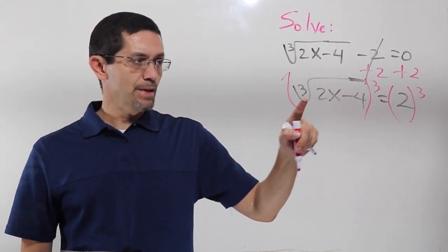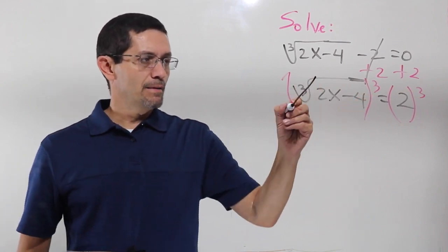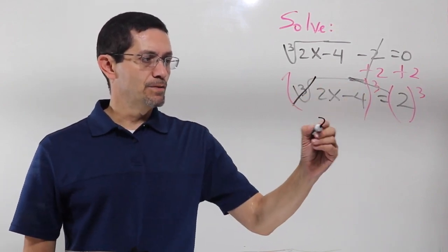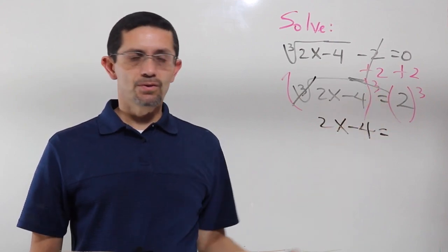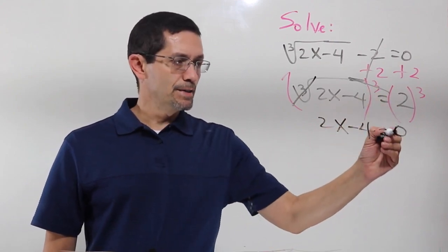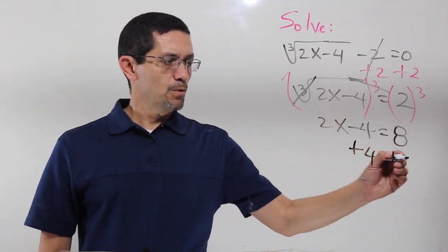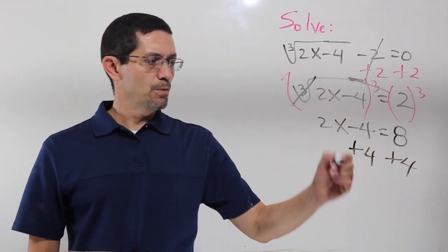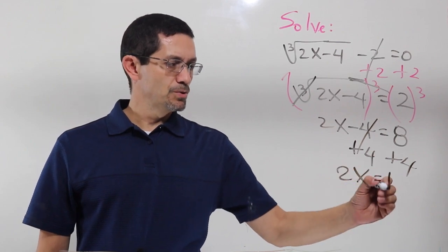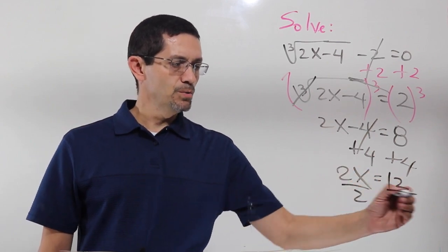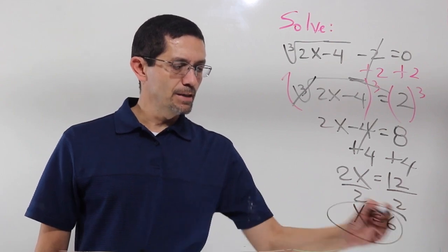If I have a cubic root, then I'll raise it to the third power. That will cancel that. And I'll have 2x minus 4, and 2 to the third power is 8. After that, it's just a matter of solving. Plus 4, plus 4. I have 2x equals 12, divided by 2, 2x equals 6.